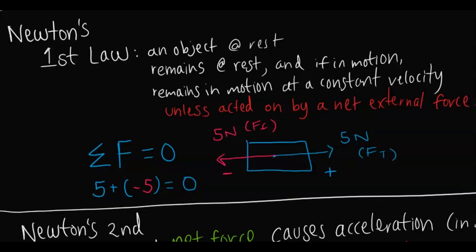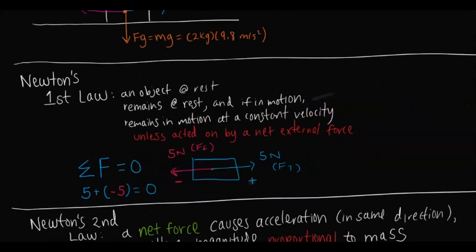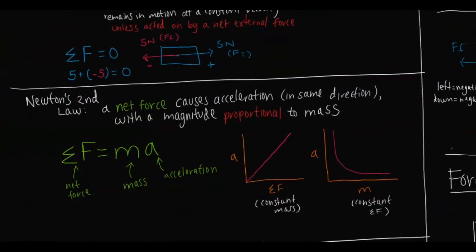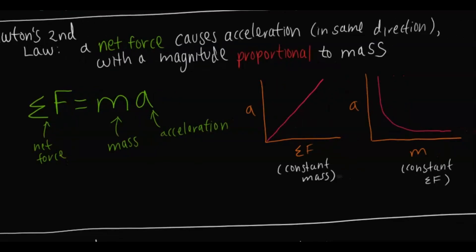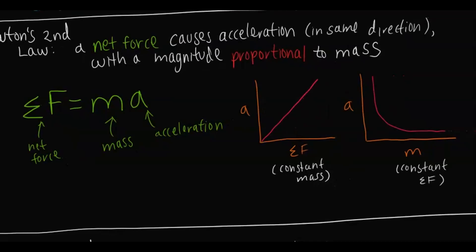You can tell the difference between at rest or moving by the type of friction — either static or kinetic — which we'll cover with the chart. Newton's second law is where you do have a net force: a net force causes acceleration in the same direction. The equation is net force equals mass times acceleration. When net force increases, acceleration increases proportionally given constant mass. And if mass increases with the same net force, acceleration decreases inversely.